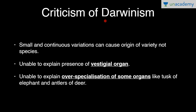Now, the criticism of Darwinism. The theory of Darwinism is criticized on several points. First, small and continuous variations can cause the origin of variety, not species. Darwin talked about small, continuous variations but did not address discontinuous variation — that is, mutation. His lack of explanation for discontinuous variation in the origin of species was a key point of criticism.